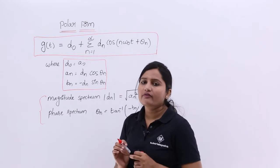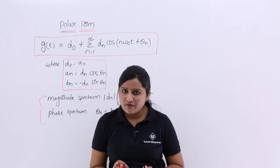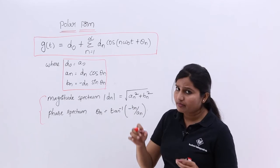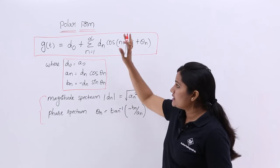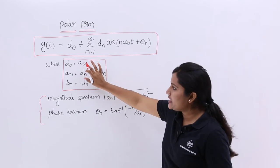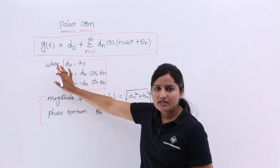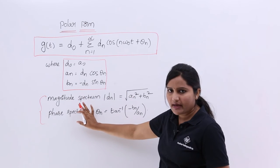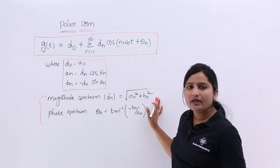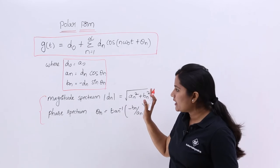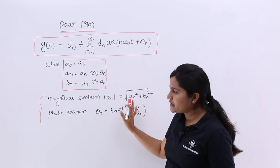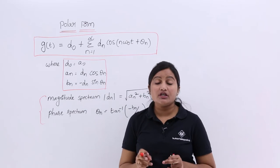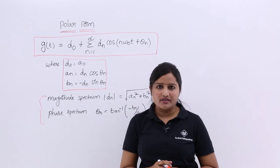This is about the polar form of the signal. Polar form is very important — each and every point on this board can come directly into your exam. That includes the equation of polar form, the relation of trigonometric coefficients in terms of polar coefficients, and the magnitude and phase spectrum in terms of trigonometric coefficients. By keeping these three points in mind, you can solve many problems related to polar form and trigonometric Fourier series.